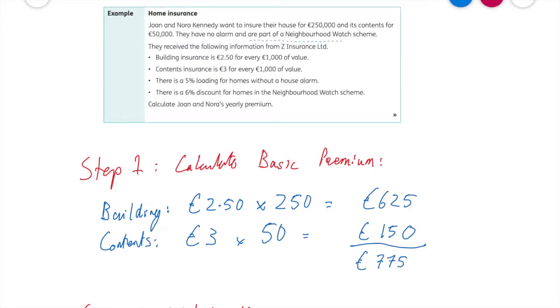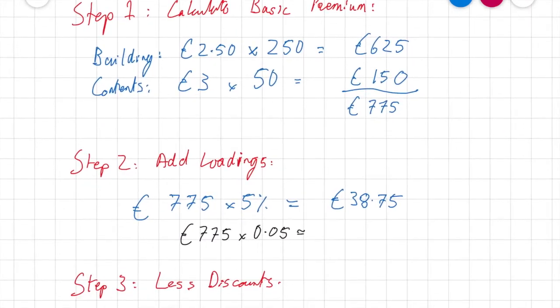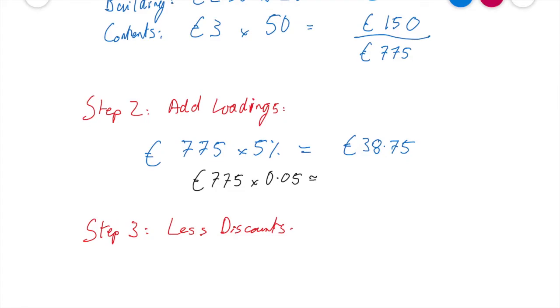They are part of a Neighbourhood Watch Scheme. Happy days. So, they get a 6% discount for that. So, what we do is here, what we're going to have to do is we take into account the entire amount. So, the first thing I'll do is I'm going to add up my figure of my basic premium, and I'm going to have to add in my loading.